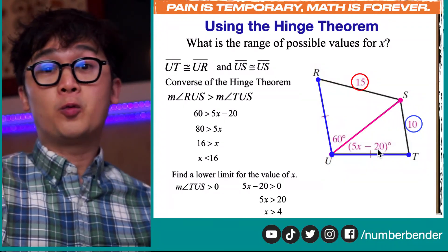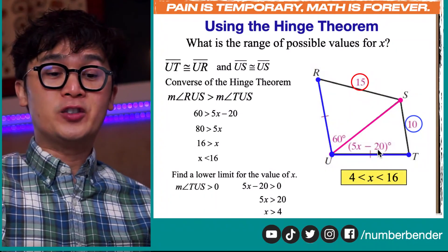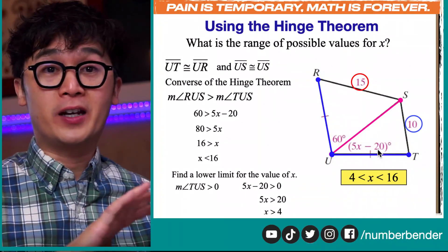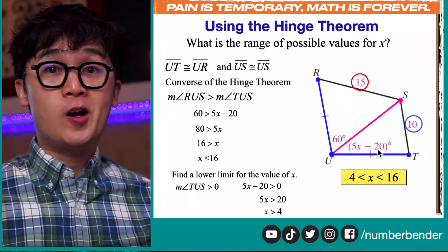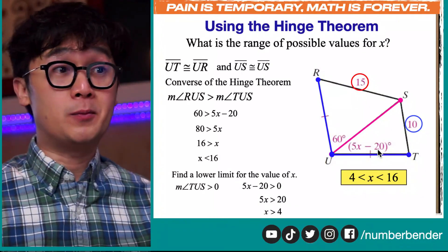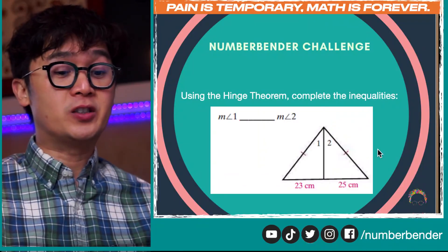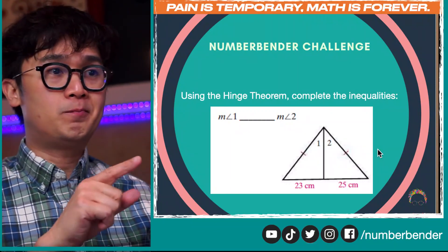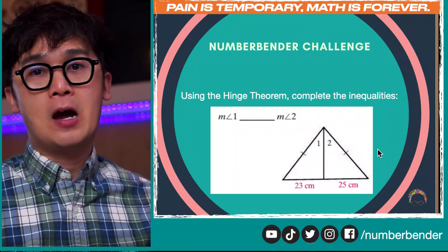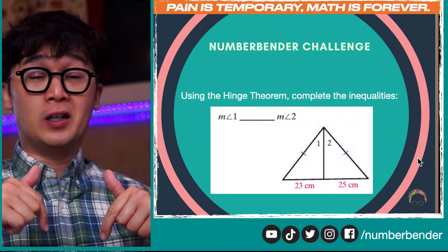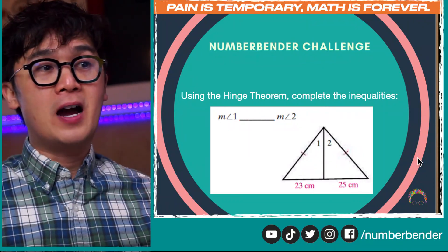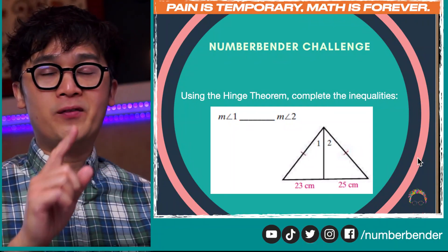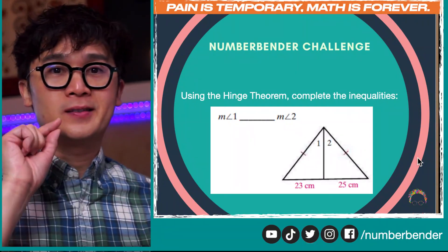This is how we solve this problem using geometry and algebra. Knowing your algebra and knowing how to write your equation correctly will help you solve more complex problems. Your number bender challenge of the day is to find the correct inequality for M1 and M2 using the Hinge Theorem and the given values on the two triangles. Comment it down below and see how you figure out the proper inequality.